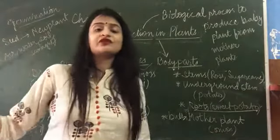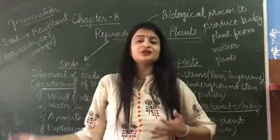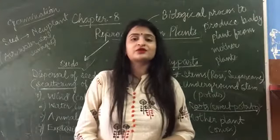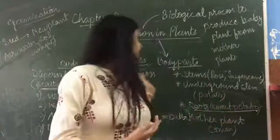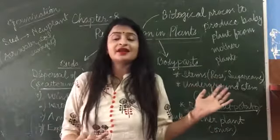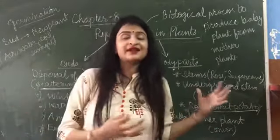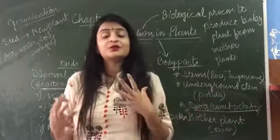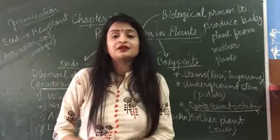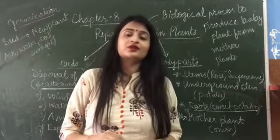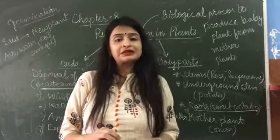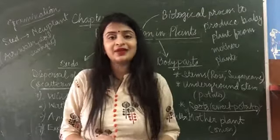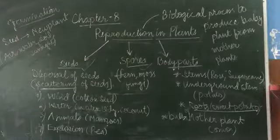With this we have completed our chapter. Hope you all have understood the main process of reproduction of plants and its categories — the ways through which the process completes. The question answers of this chapter are being uploaded on the site. Kindly complete your chapter in your book and keep learning. Thank you.